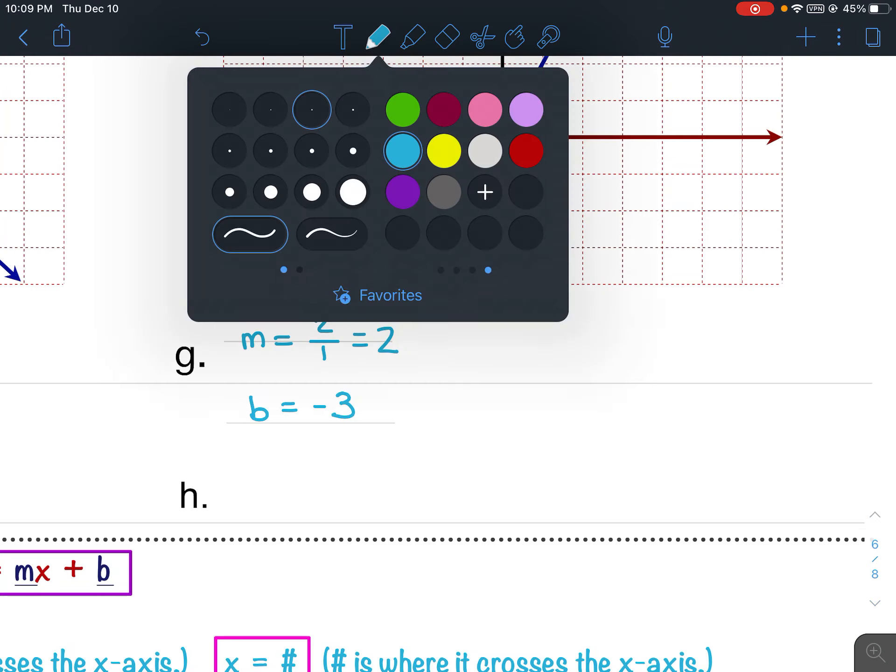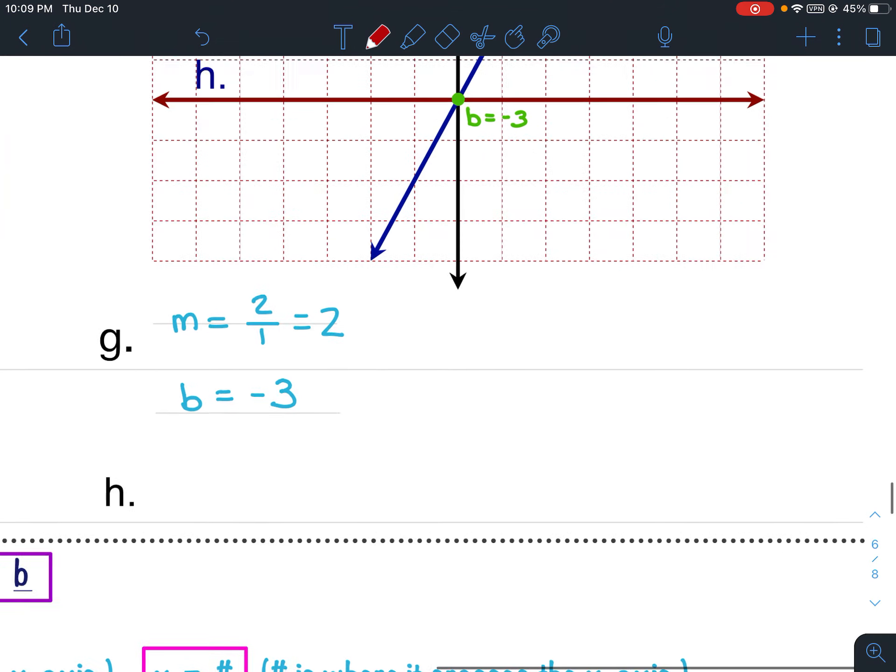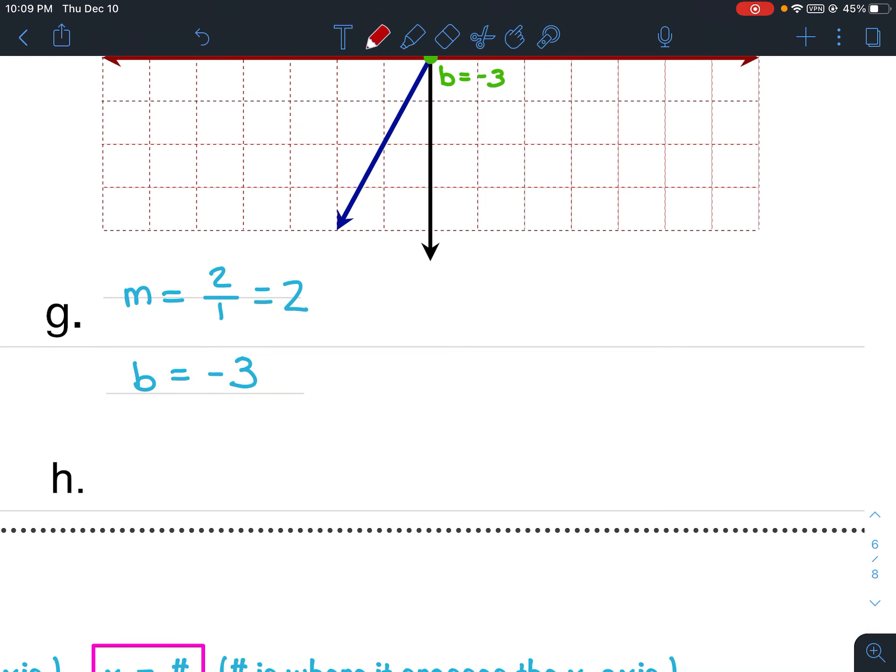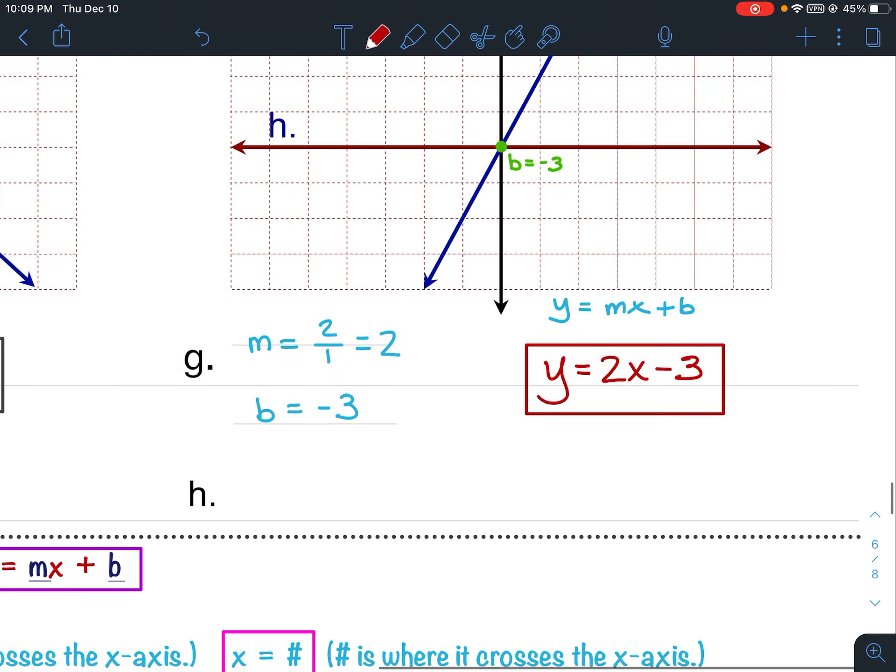Alright, so now I write my equation. So, again, it's going to be of the form y equals mx plus b, because it's a slanted line. So, y equals, my slope is 2. Then I have x, and my y-intercept is negative 3. So, y equals 2x minus 3 is my equation for g.